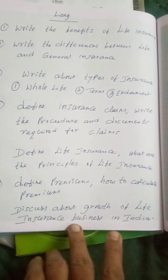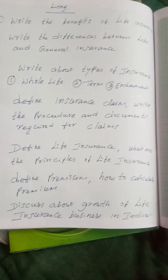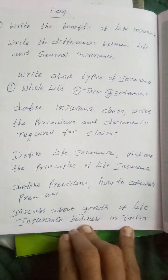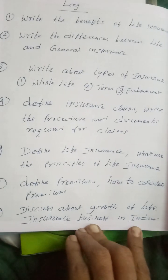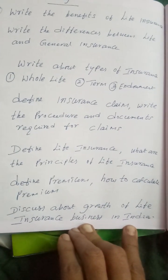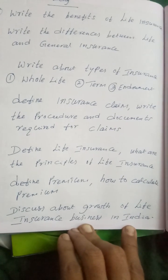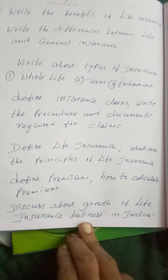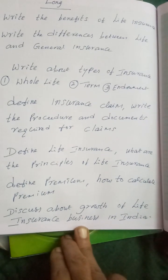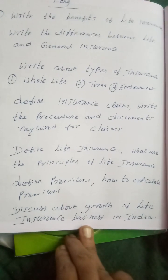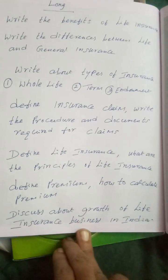There are two kinds of claims: claims by maturity. What are the principles of life insurance? These are important topics to cover.